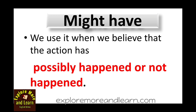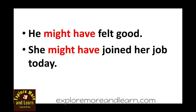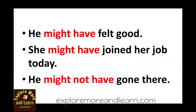We use might have when we believe that the action has possibly happened or not happened — it has not definitely happened. For example: 'He might have felt good' — you are not sure, so you use might have. Another example: 'She might have joined her job today' — again, you are not sure. In the negative form: 'He might not have gone there' — you are making a guess about which you are not sure. We always talk about a past action when we use must have or might have.